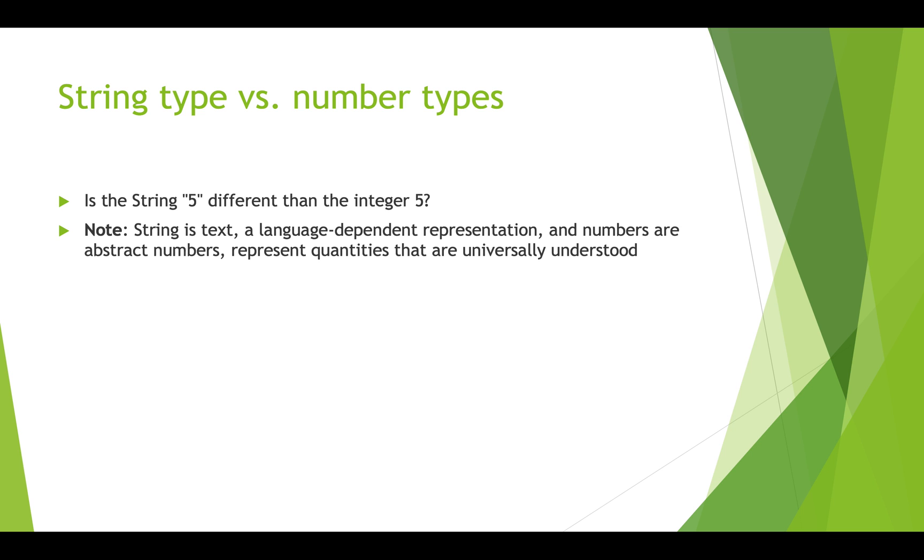String is text and it's language dependent and numbers are just an abstract concept. So these two variations, 1,234.56 and 1,234.56 with the comma in it, are both two different string representations. They are equivalent to this abstract number 1,234.56.